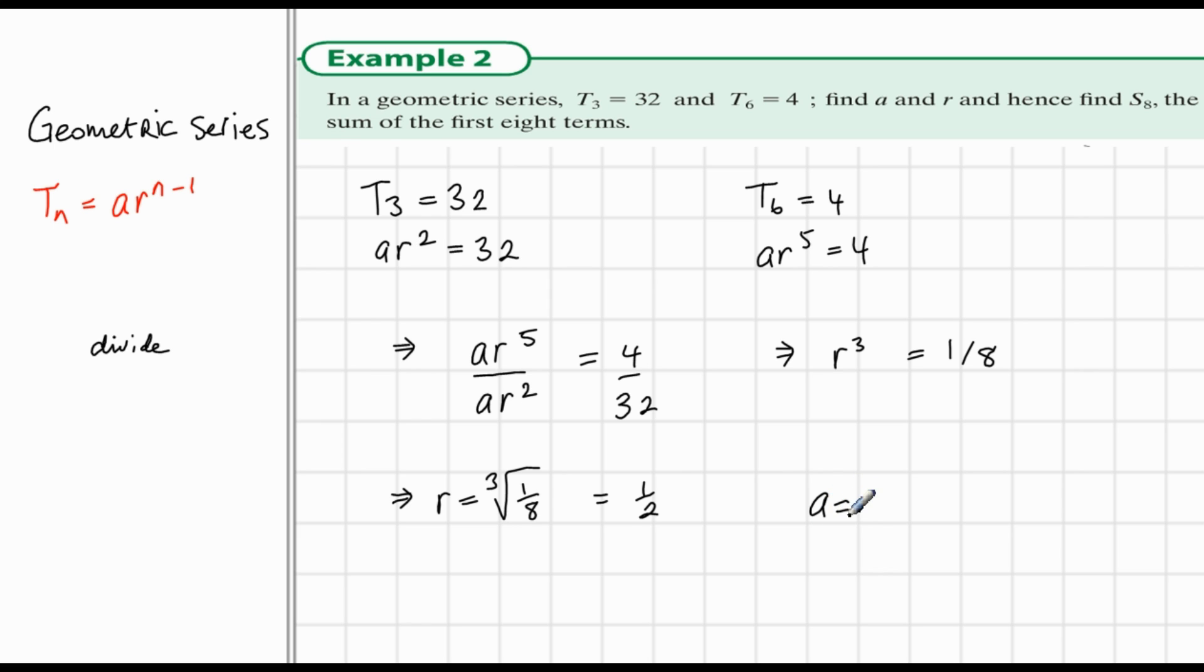Now, we can find what a is, since we know what r is. And a is given by 32 divided by r squared. This is from this first equation, since ar squared is equal to 32. And subbing into this equation, a half instead of r, we have 32 divided by r squared. That's 32 divided by a quarter, or 32 multiplied by 4. And 4 times 32 is 128.